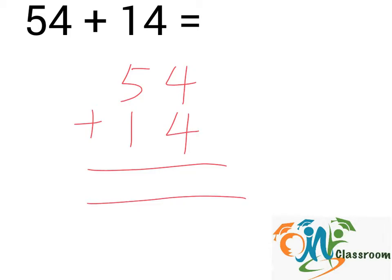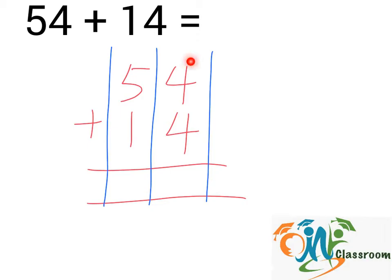Now we will divide the numbers into columns — column 1 and 2. Next, we will add up the numbers in each column from right to left.